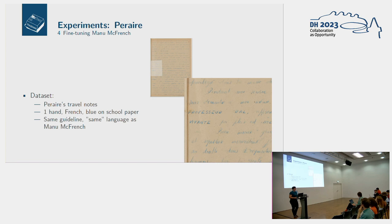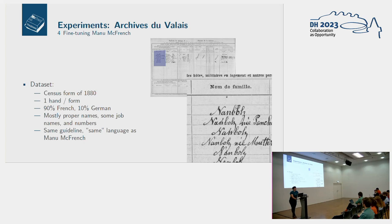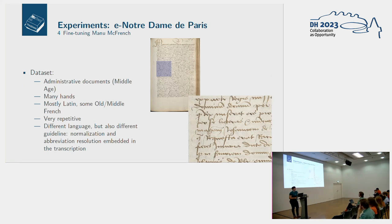We used three datasets. The first was Perer — a 19th-century dataset from a French traveler, only one hand, written on school paper in blue pencil, very different from the handwriting types in our training data. The second was the Archive du Valais, a series of census tables from the end of the 19th century, one hand per form, great variety of hands, mixing a bit of German with French, and containing mostly proper names, job names, and numbers. The third was the ENDP dataset, very different from the others used to create Manumac French — it's from the medieval period, the transcription guidelines were not the same, it contains many hands, but some formulas are repetitive.